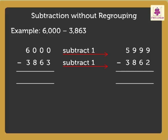Now, subtract these numbers to get the answer. We get the answer as 2,137. Thus, the difference of 6,000 and 3,863 is 2,137.